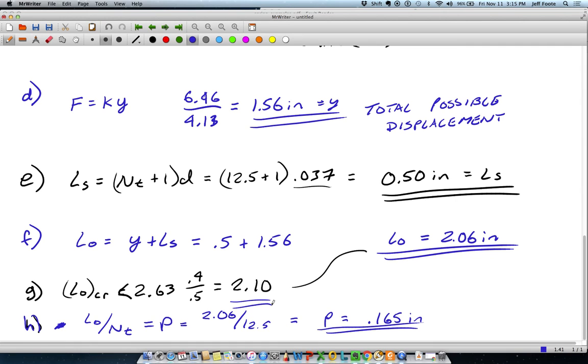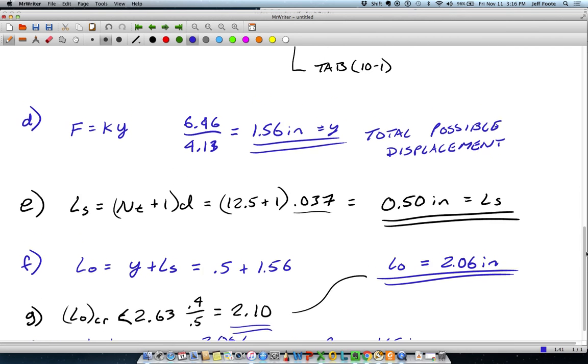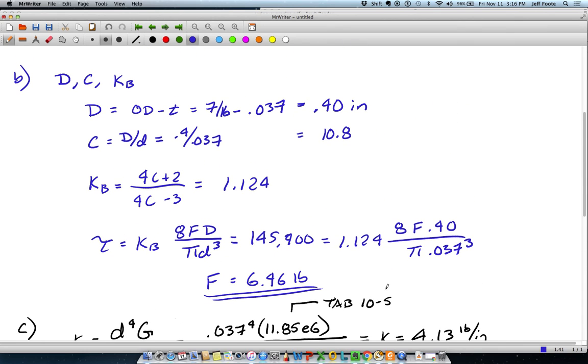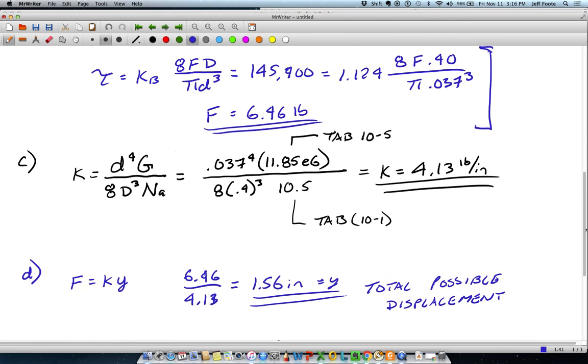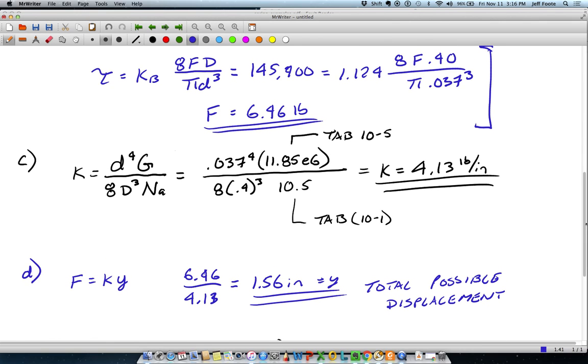We'll point out real quick that the calculations carried out here, starting from this point on, I'm essentially designing a spring that at its shut length will be right at its yield strength. So there's no factor of safety against the yield built into this at all. I could build some of that in, no problem, just by reducing the allowable stress. Here, when I set this equal to the yield strength, I could set that to a lower value to build in a factor of safety.